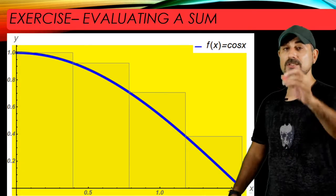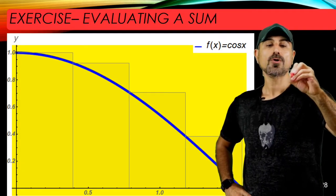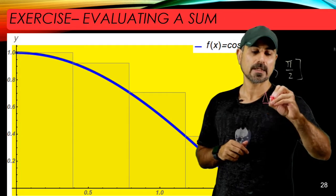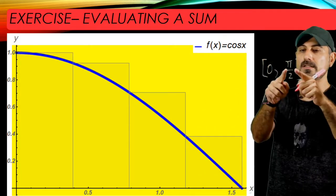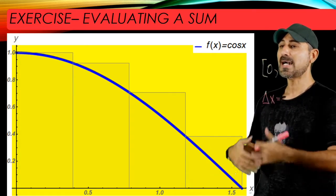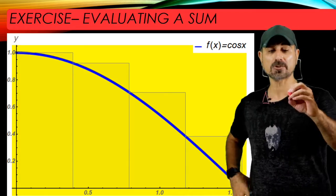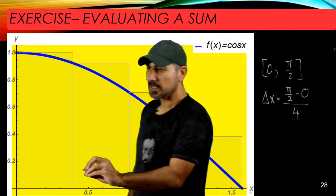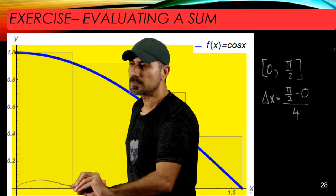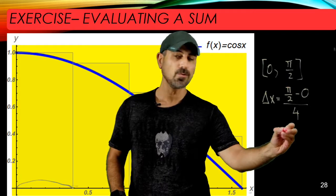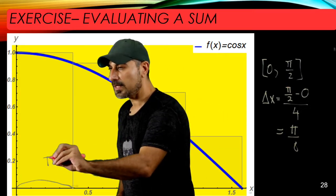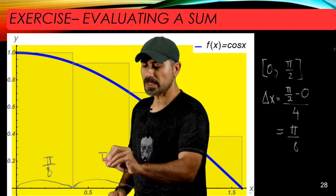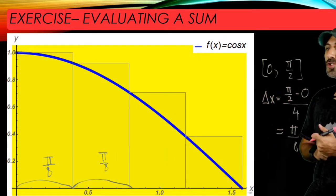Now let's split the interval zero and pi over two into four equal pieces. The length of each subinterval is going to be represented by delta x. Delta x is essentially the right end of the given interval minus the left end, divided by the number of rectangles — so pi over two minus zero divided by four. That gives the length of each subinterval as pi over two divided by four, which is pi over eight. So each subinterval has the same uniform length of pi over eight.